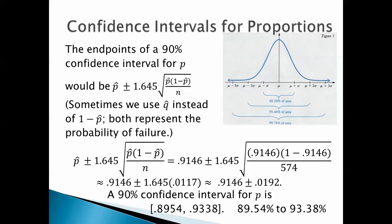We've got to express it as a decimal when we use this formula. Plus or minus 1.645 times the square root of 0.9146 times 1 minus 0.9146 all over 574. Remember in this problem, n equals 574 is the number of trials. That simplifies to 0.9146 plus or minus 1.645 times 0.0117, which is 0.9146 plus or minus 0.0192.